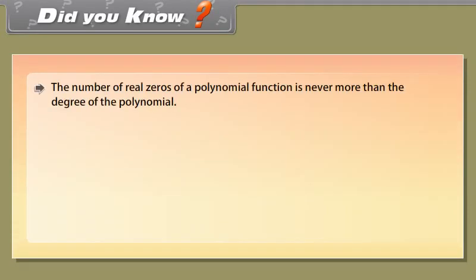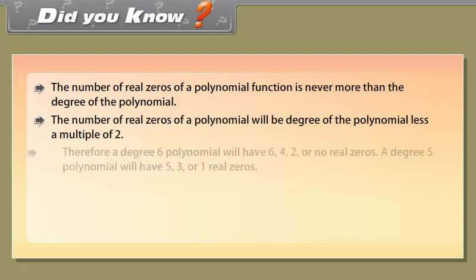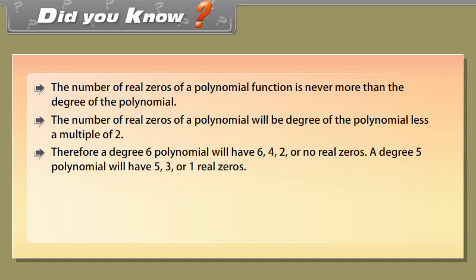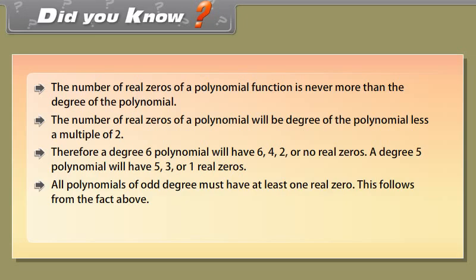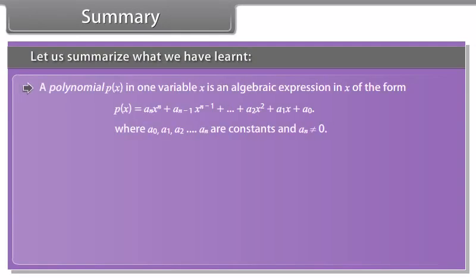Algebraic Identities. There are some algebraic identities to learn. Example: Evaluate 107 × 104 without multiplying directly. 107 × 104 = (100 + 7)(100 + 4) = 100² + (7 + 4) × 100 + 7 × 4 = 10,000 + 1,100 + 28 = 11,128.